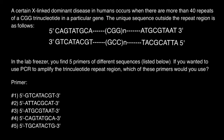In order to find the length of this repeat, we have to design primers, run PCR, and then gel electrophoresis in order to find the length of this fragment. In the lab freezer you find five primers of different sequences listed below. If you want to use PCR to amplify the trinucleotide repeat region, which of these primers would you use?